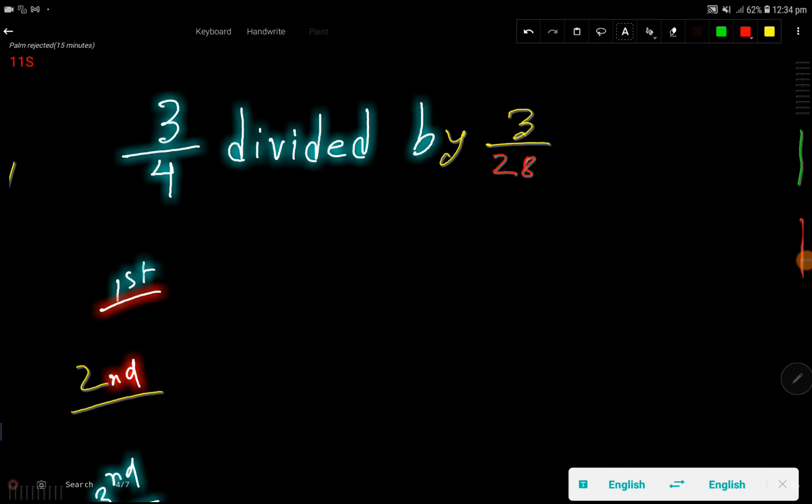3 over 4 divided by 3 over 28. Okay, in the first step I will just translate this expression. This divided by means division sign and 3 over 28.